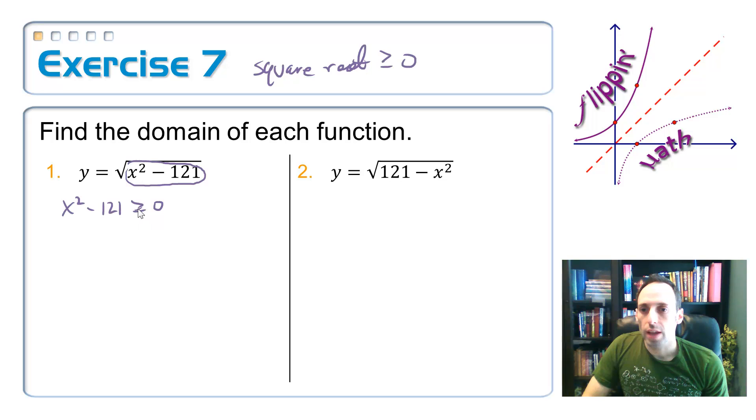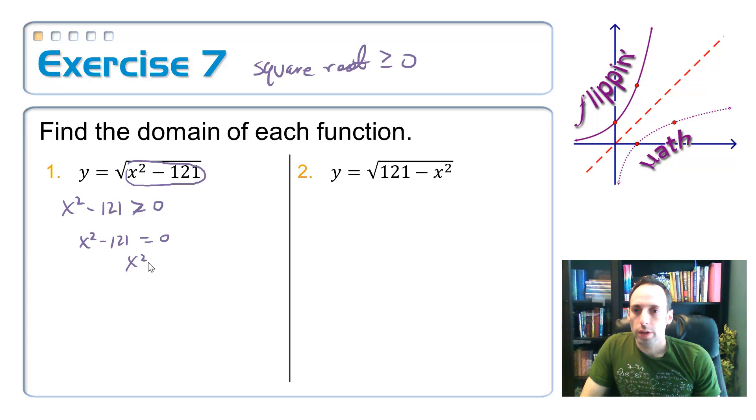So instead of thinking this as an inequality, let's think of this as x squared minus 121 is equal to zero. Just do some pretending. Add the 121 over, x squared equals 121, take square root, plus or minus 11. Okay, so far.